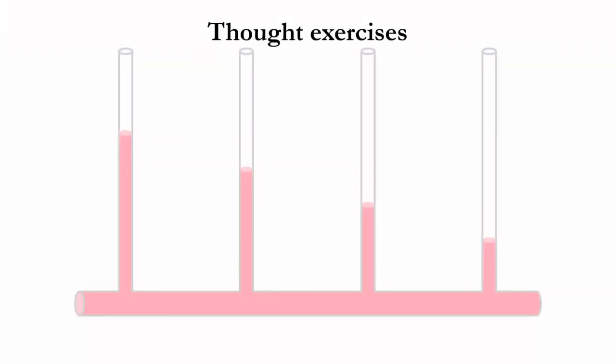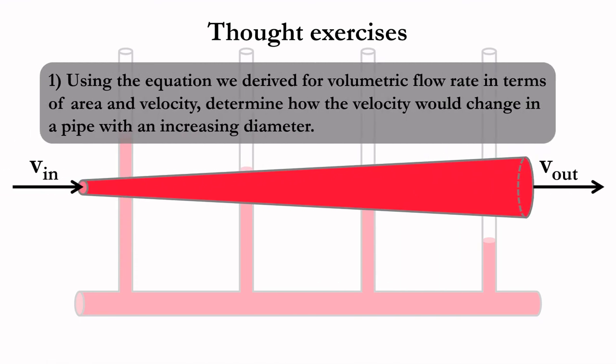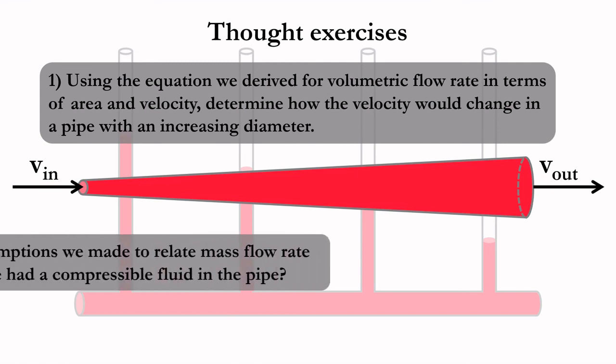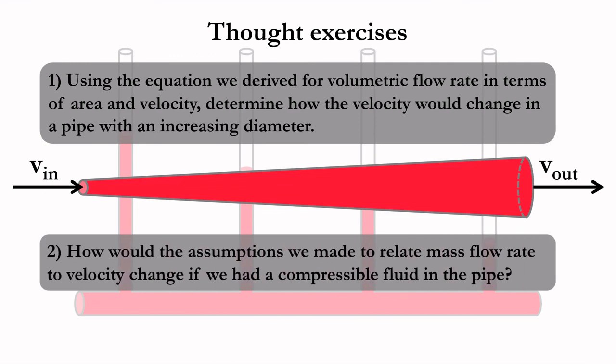Here are some thought exercises for you to consider. Using the equation we derived for volumetric flow rate in terms of area and velocity, determine how the velocity would change in a pipe with an increasing diameter. How would the assumptions we made to relate mass flow rate to velocity change if we had a compressible fluid in the pipe, such as a gas?